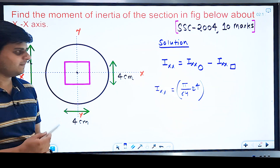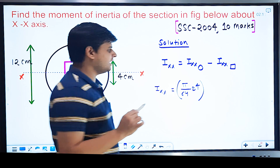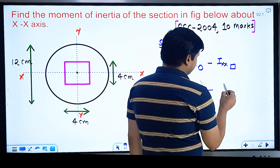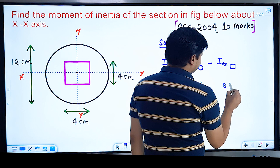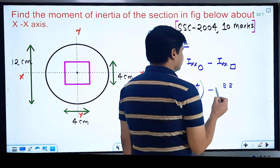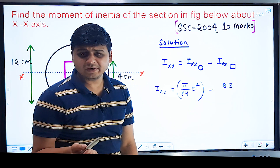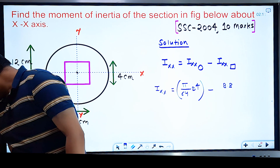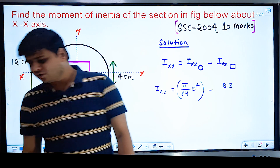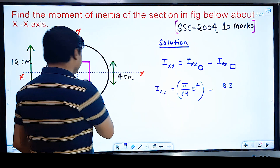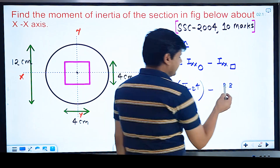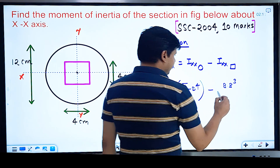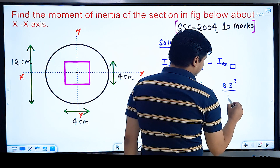The moment of inertia of a circle about its centroidal axis is π/64 × D⁴. For a square (which is a special rectangle), the formula comes from BD³/12 for a rectangle; since B = D for a square, it becomes B⁴/12.